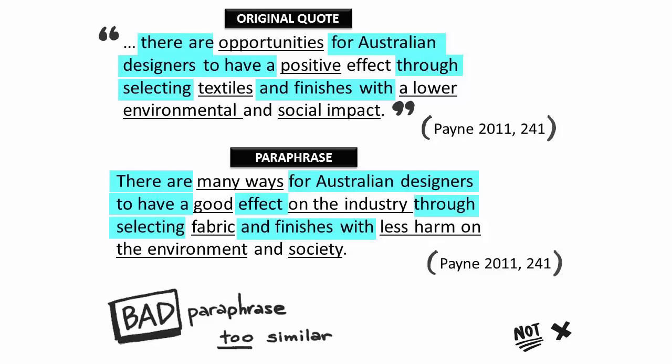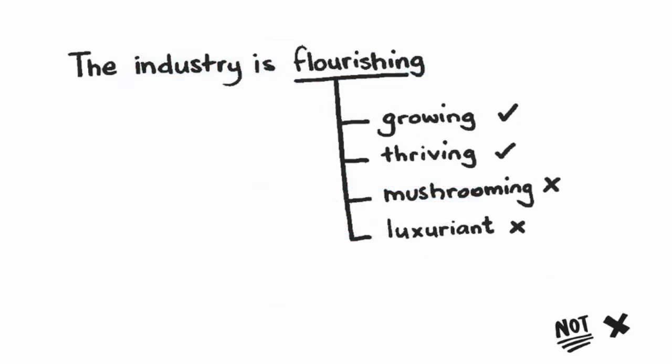These small phrases are still Payne's original words, so I can't use this as a legitimate paraphrase — I would be better off keeping the original quote. One of the main problems with using a thesaurus is that you need to be careful with how the meaning can change when a new word is used. Often a reader can tell that you have just right-clicked and selected a synonym because it just doesn't sound right in your assignment.